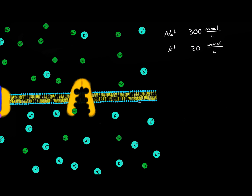On the inside of the cell, the sodium concentration is relatively low — around 20 millimoles per liter — and the potassium concentration is around 400 millimoles per liter. These numbers vary from species to species, but if a cell is alive, it will have a higher concentration of sodium on the outside than potassium, and potassium will have a higher concentration on the inside than on the outside. If it doesn't, the cell is most likely dead.